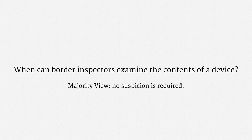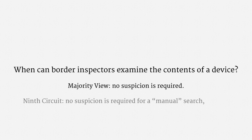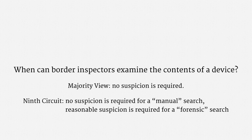In a 2013 case, United States against Cotterman, the Ninth Circuit set out a competing view. It held that no suspicion is required for a "manual" search. Reasonable suspicion is, however, required for a "forensic" search. What exactly differentiates a manual search from a forensic search isn't quite clear. The rough idea seems to be that a manual search is straightforward rummaging on the spot, while a forensic search involves shipping a device off to a lab for a thorough examination.